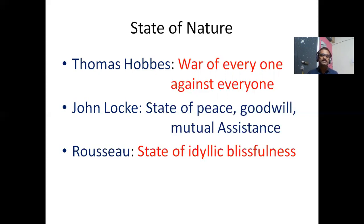Rousseau described a state of idyllic blissfulness — 'idyllic' meaning complete, real happiness. Human beings enjoyed real happiness during the state of nature because they were innocent, noble savages. They did not know the modern characteristics of selfishness, conspiracy, or jealousy. When these bad characters were absent, human beings were innocent and enjoyed real freedom. That was Rousseau's perception of the state of nature.